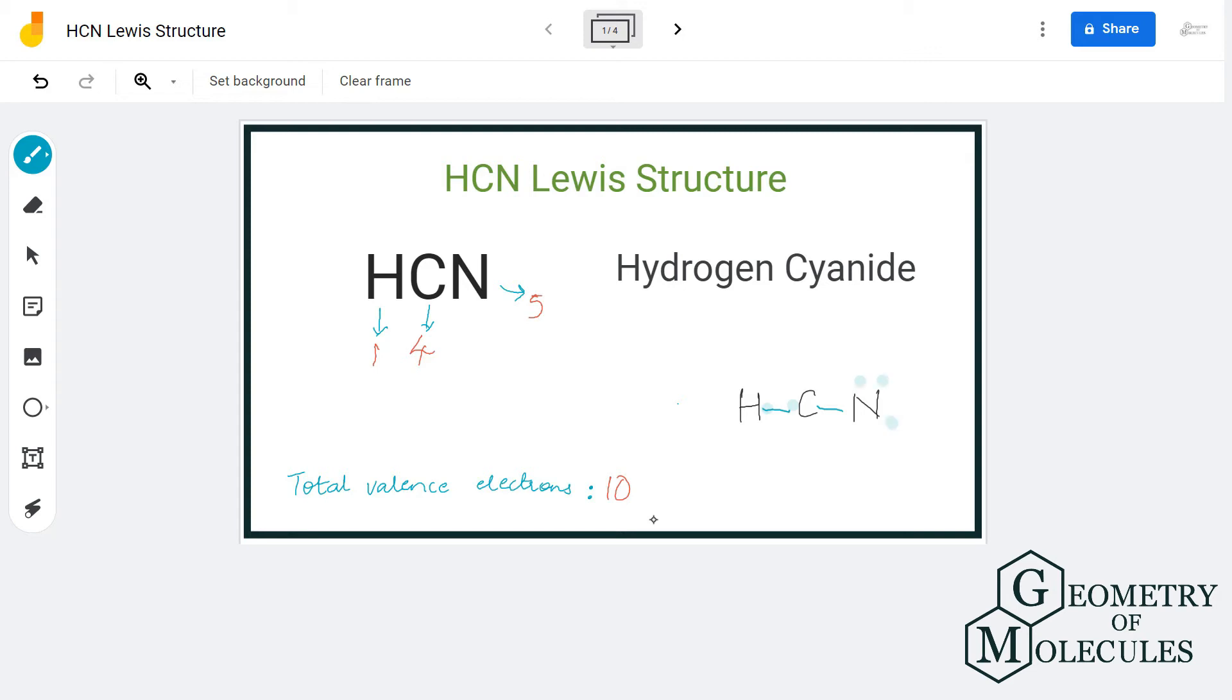Let's arrange these six electrons around nitrogen like this. Now for seeing if the Lewis structure is stable or not, we'll count the number of electrons for each atom and see if their octets are complete. Here hydrogen has two valence electrons which means it has a complete stable structure. Carbon has four valence electrons as it is sharing two of its electrons with hydrogen and nitrogen. And nitrogen has eight valence electrons which means nitrogen has a complete octet.